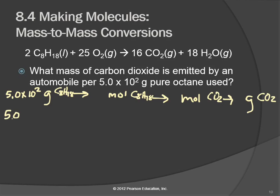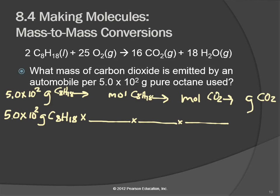Starting with 5×10² grams of octane. In these calculations it's very important to say 'grams of what?' because you're starting with grams of one thing and going to grams of another. If you don't write it down, it's easy to get things twisted. So: grams of octane, moles of octane, moles of CO2, grams of CO2 — those are the units that go on the tops of all these fractions.